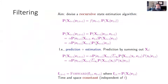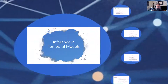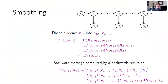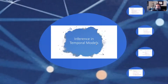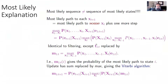Digging into these: filtering is essentially a recursive state algorithm — not going to go into detail, but the basic idea is what was described. Smoothing involves a Markov process with time events, evidence, and values. Most likely explanation: the most likely path to reach X of T plus one is the most likely path to reach some X of T, plus one more step — relatively straightforward.